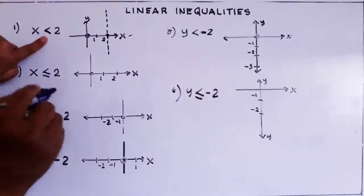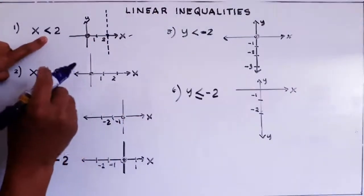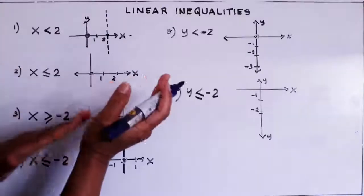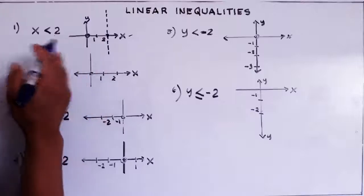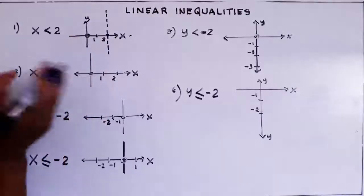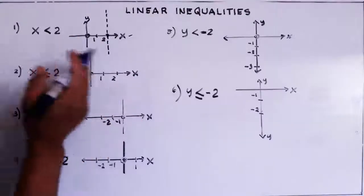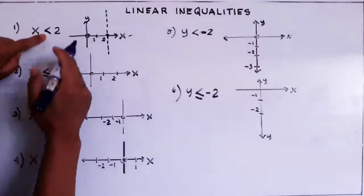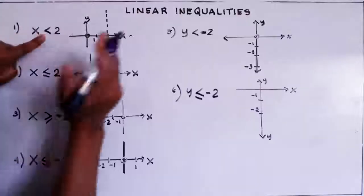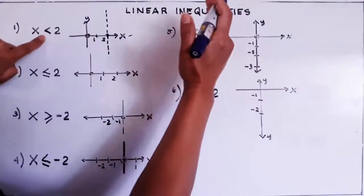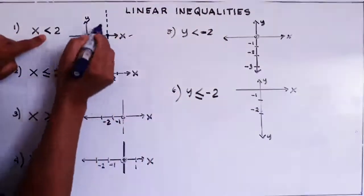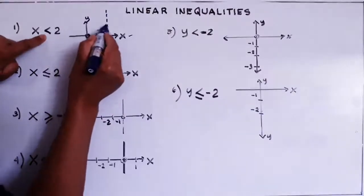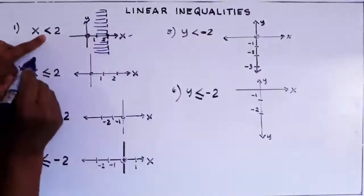Then we shade all the values of x that are true. Which side of this dotted line are the values of x located? Less means going to the left, more or greater means going to the right. So here we shade everything to the left. That's how to shade.